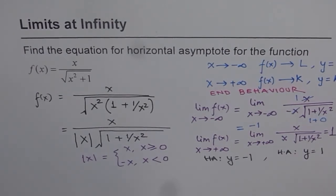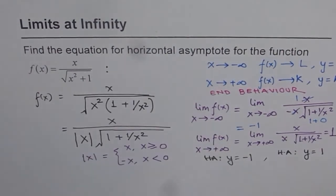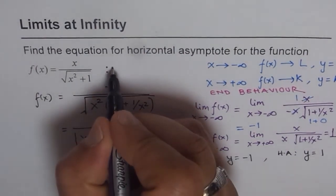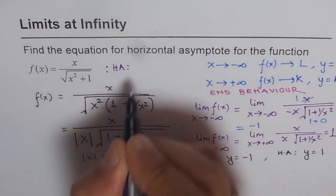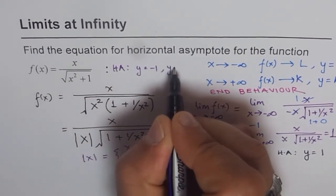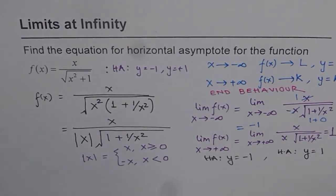So the function has two horizontal asymptotes: y = −1, which occurs as the function approaches negative infinity, and y = 1, which occurs as the function approaches positive infinity. That's how we solve this question. I hope you appreciate it. Thank you and all the best.